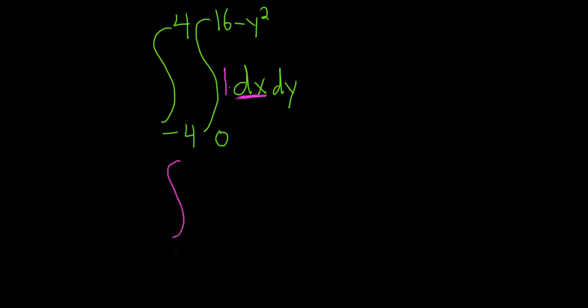Let's go ahead and do that. We'll keep the outer limits of integration, so negative 4 to 4. When we integrate 1 with respect to x, we simply get x. I'm going to put a bracket here, and we're going from x equals 0 to x equals 16 minus y squared.